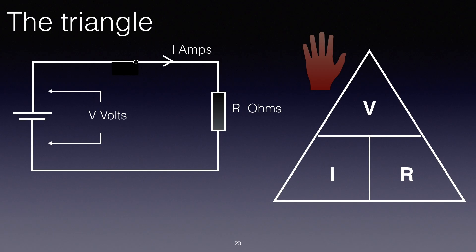We can do the same thing by covering up the I. Now we've got a V above an R, V over R. So we can write the formula I equals V over R.